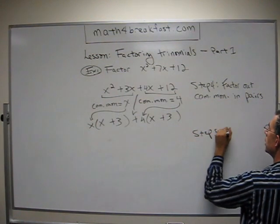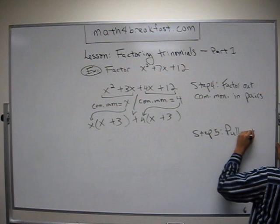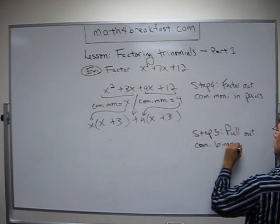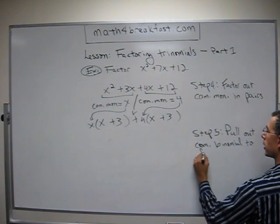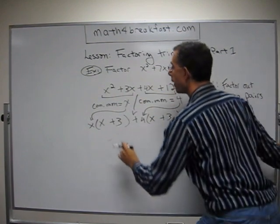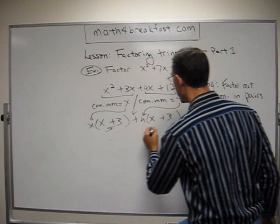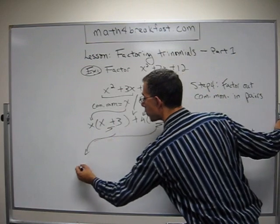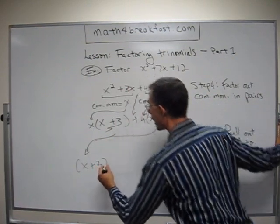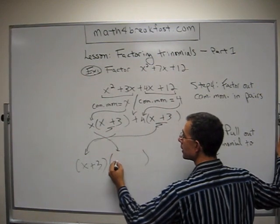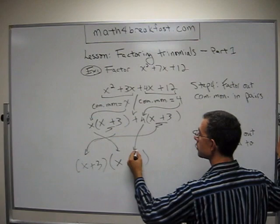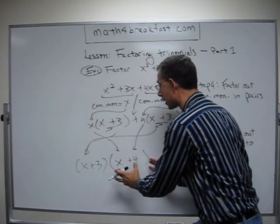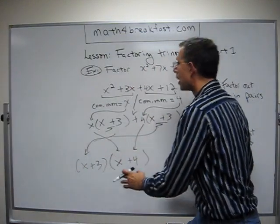We're not quite done yet, because this is all added. We want just multiply with multiply. Step 5: pull out the common binomial to the front. These both have an x plus 3 — that's common to both of them, and that x plus 3 can come out to the front. So now I have (x plus 3), and what's left: the x stays, plus 4. And now I have something times something — I know I've factored it. Done.